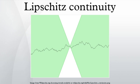In mathematical analysis, Lipschitz continuity, named after Rudolf Lipschitz, is a strong form of uniform continuity for functions. Intuitively, a Lipschitz continuous function is limited in how fast it can change: there exists a definite real number such that, for every pair of points on the graph of this function, the absolute value of the slope of the line connecting them is not greater than this real number. This bound is called the function's Lipschitz constant.